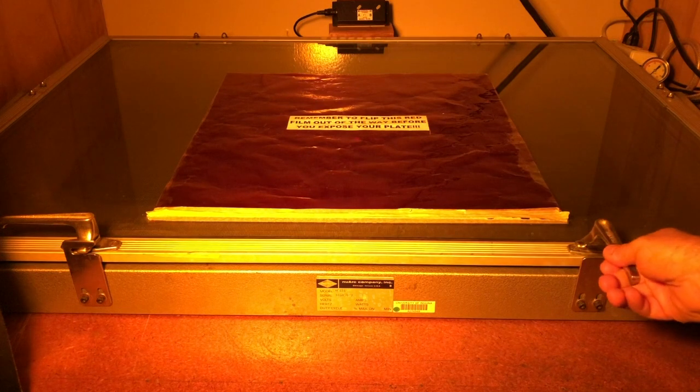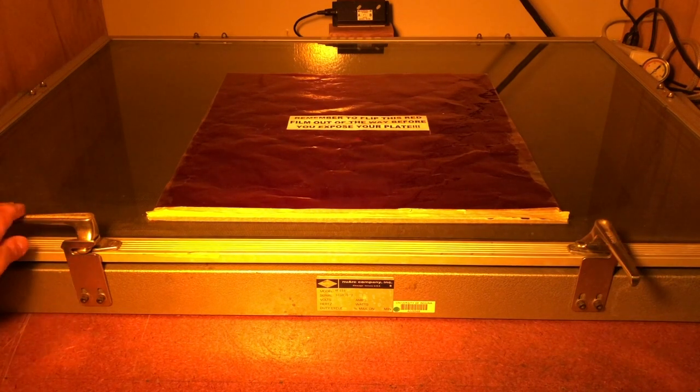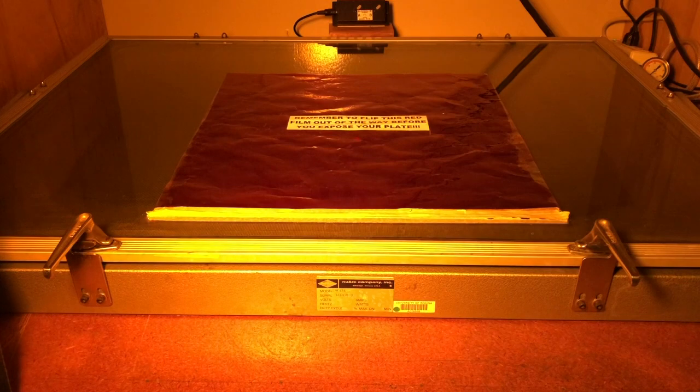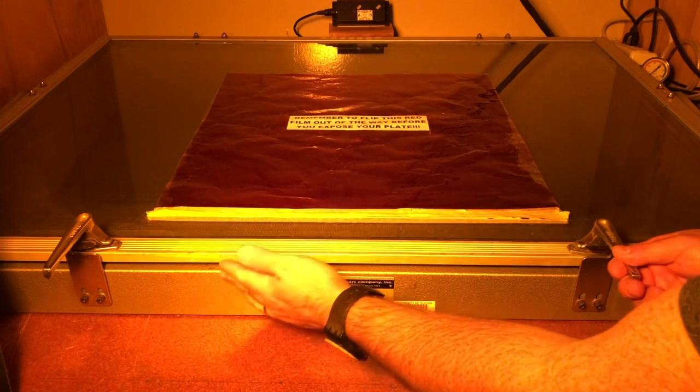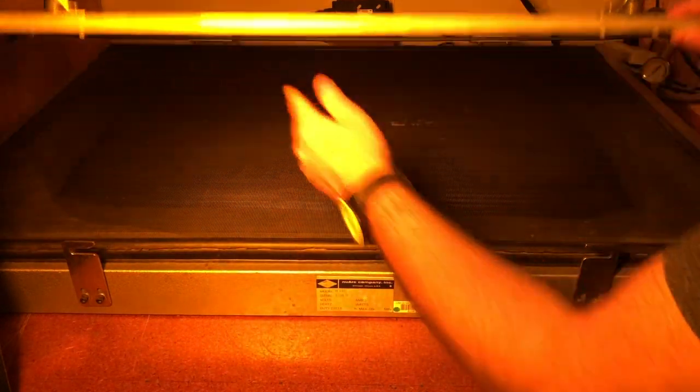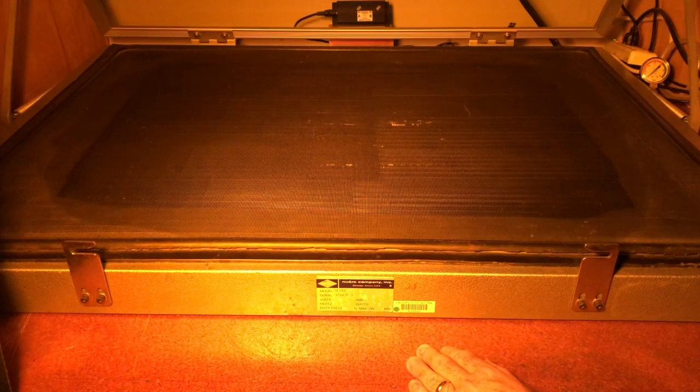So, the exposure unit is on, and it's been warming up, and carefully opening the hasps, will lift the glass with two hands. You never want to do this with one hand. The glass is spring-loaded, and has a tendency to go flying up, and it could potentially break.